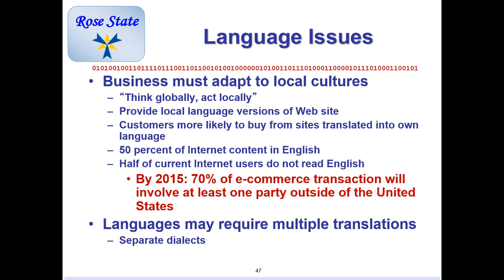You need to identify and address the trust barrier and ensure integrity and security in the environment — it's difficult for online businesses because you don't know how well things will work out. Business must adapt to the local country: think globally, act locally. Make sure you have local language support so users can change the language. Fifty percent of all internet content is in English, but by 2015 70% of e-commerce will involve at least one party outside the United States, mainly India and China.